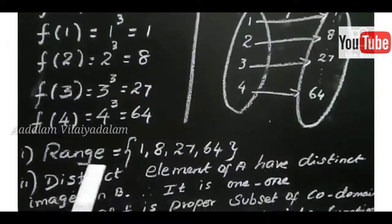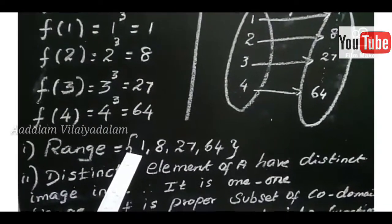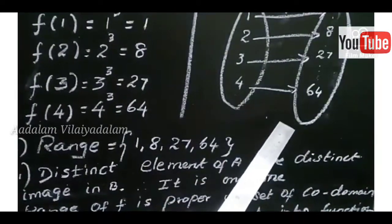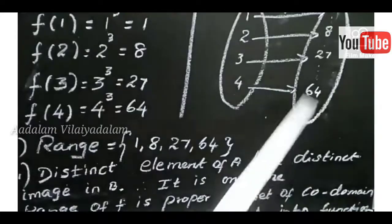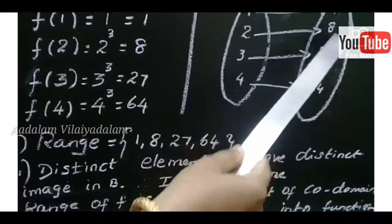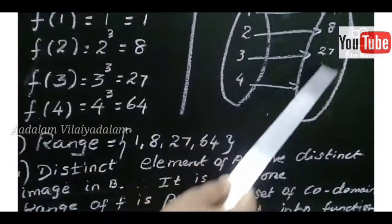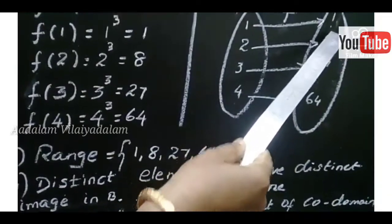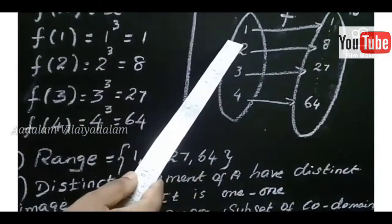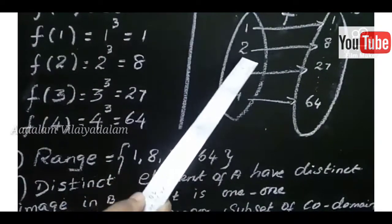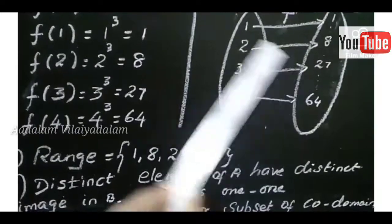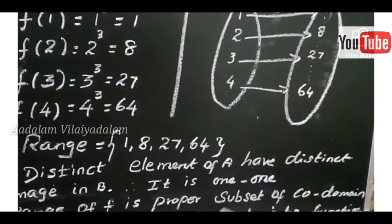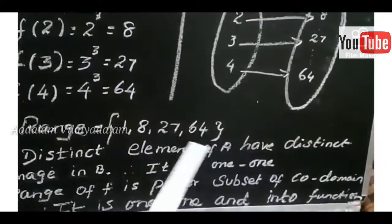Next, the range of F is a proper subset of the codomain, therefore it is an into function. Elements 2, 3, 4, 5, 6 belong to the codomain but there is no pre-image in A, therefore it is an into function. So the type of function is one-to-one and into.